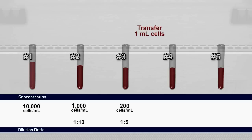Transfer 1 milliliter from tube number 3 to tube number 4 for a 1 to 5 dilution and a concentration of 40 cells per milliliter. Finally, transfer 1 milliliter from tube number 4 to tube number 5 for a 1 to 5 dilution yielding 8 cells per milliliter.